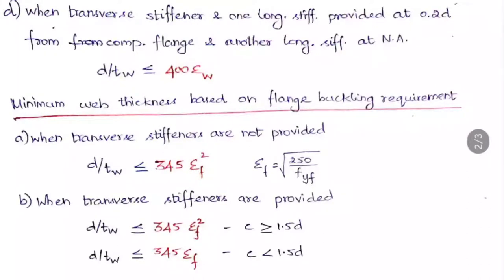The other condition for minimum web thickness is based on the flange buckling requirement. When transverse stiffeners are not provided, d/tw ≤ 345·εf. When transverse stiffeners are provided with spacing greater than 1.5d, d/tw ≤ 345·εf²; when spacing is less than 1.5d, d/tw ≤ 345·εf. Here εf = √(250 / fyf), where fyf is the yield stress of the flange. This covers both web thickness and the economical depth of plate girders.